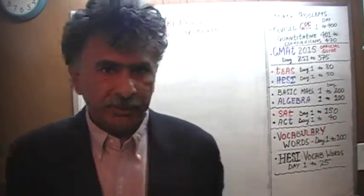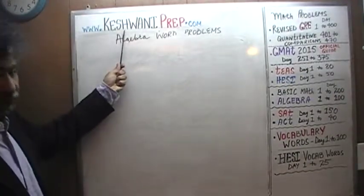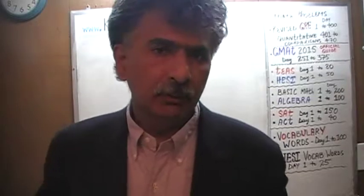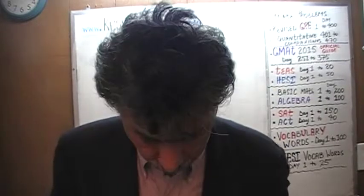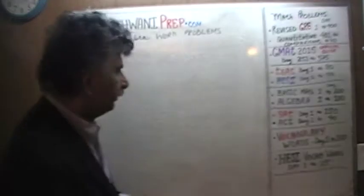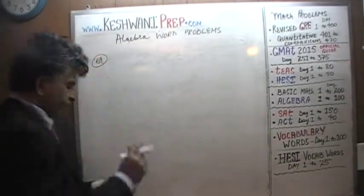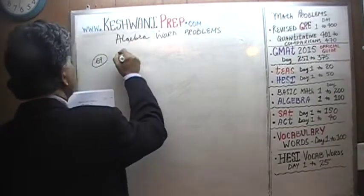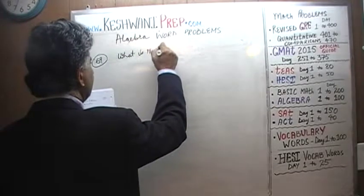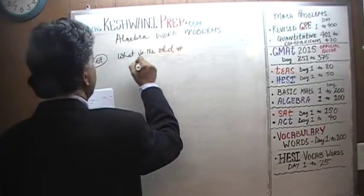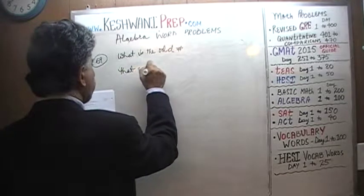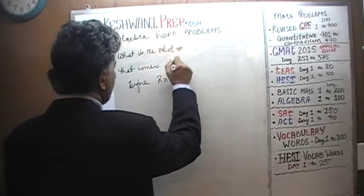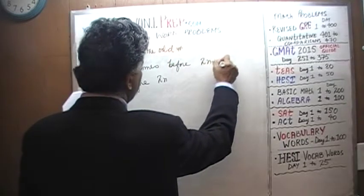Hello, my name is Keshwani — that is K-E-S-H-W-A-N-I. We are here because we want to learn how to solve algebra word problems. Today we will begin with problem number 69. Very straightforward, simple question. The question simply is: what is the odd number that comes before 2n plus 1?